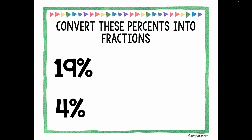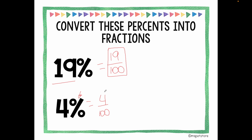Pause the video and try to convert these percents into fractions. For 19 percent: my numerator is 19, and percent means out of a hundred — so 19 over 100. Dividing would give a decimal, so I will not simplify. This is its simplest form. For 4 percent: four is my numerator, percent means out of a hundred, so I place 100 as the denominator. Both are even numbers, so I can divide by four. Four divided by four is one, and one hundred divided by four is twenty-five. So the answer is 1 out of 25.